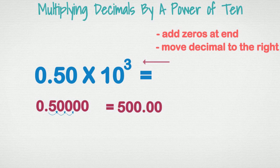Let's check our answer just in case. Ten cubed is equal to one thousand, and one thousand times 0.5 equals 500.